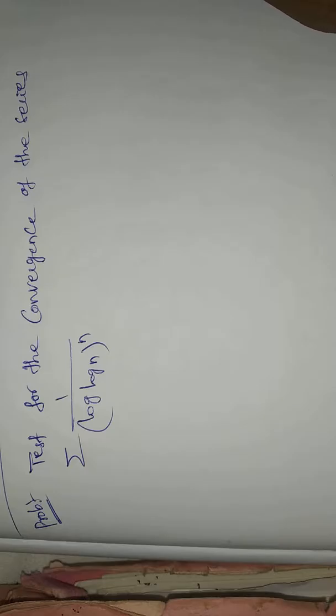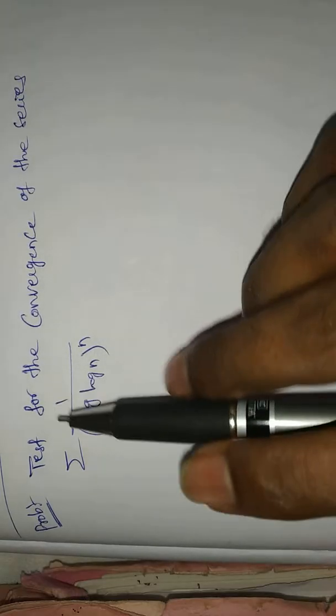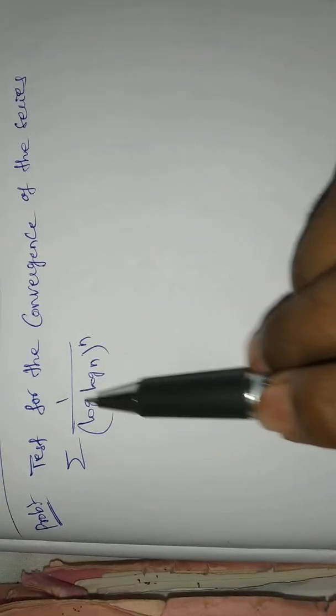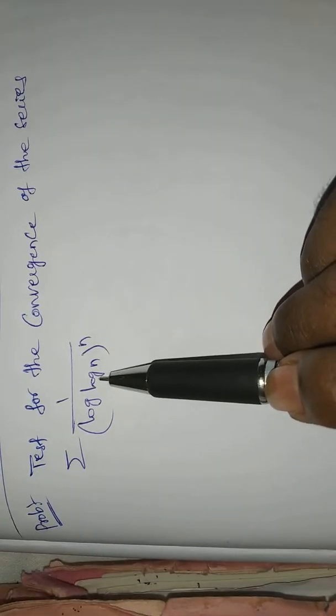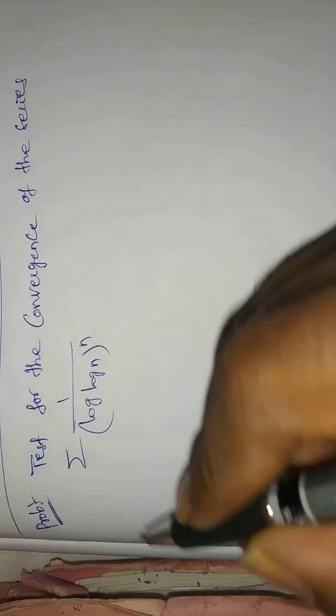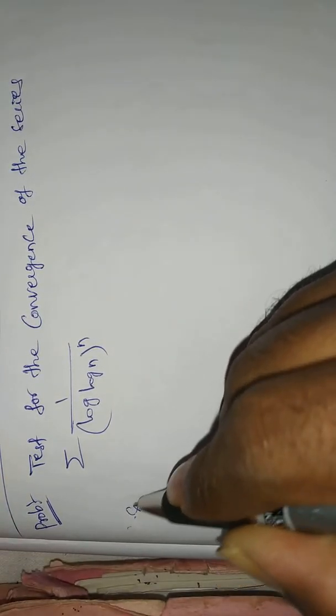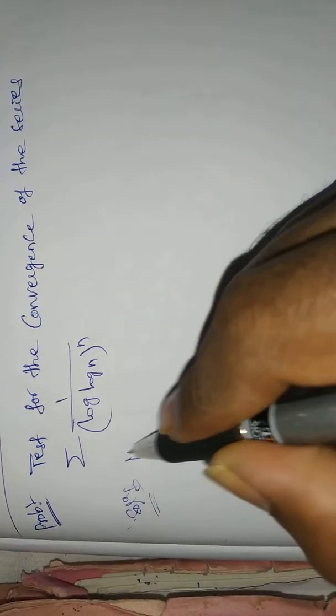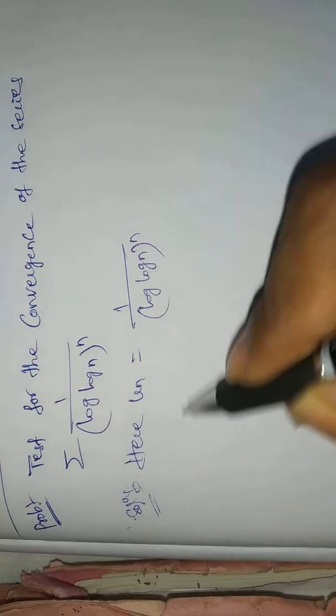Welcome to Rajasvekar. Today our topic is Cauchy's nth root test — problem on sequence and series. Test for the convergence of the series summation 1 by (log(log n))^n. Solution: here, u_n equals 1 by (log(log n))^n.